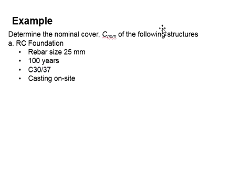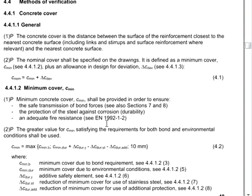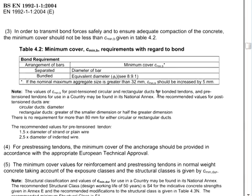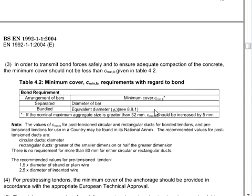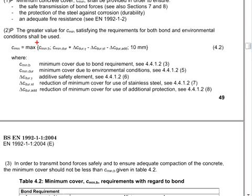So, let us try to do this example. First of all, you need to identify the size of the reinforcement bar, which is 25. According to the equation, your C minimum due to the bar will be equal to the diameter of the bar. Therefore, C minimum bar will be equal to 25.